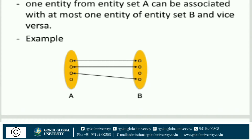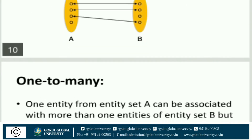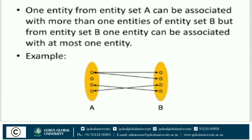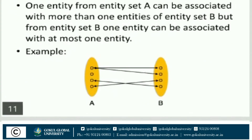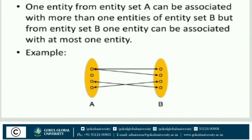You can see this in the example diagram as well. Number two is one-to-many cardinality: one entity from entity set A can be associated with more than one entity of entity set B. Here two entity sets A and B are shown, and number of entities from B can be associated with at least one entity from A.